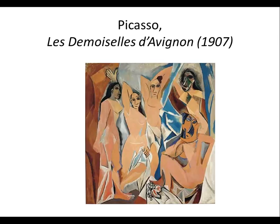Let's look at a very important cubist painting by Picasso — one of the landmark paintings of cubism. Notice as you move from the left side of the painting to the right side, the figure becomes more and more abstract. You move away from traditional perspective, and over here you see every angle of the woman's face all at the same time, as well as her body. You can see she is facing forward and to the side simultaneously.